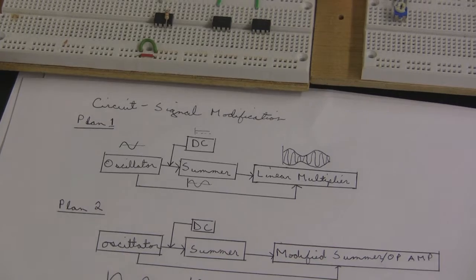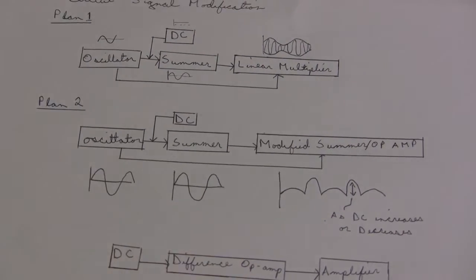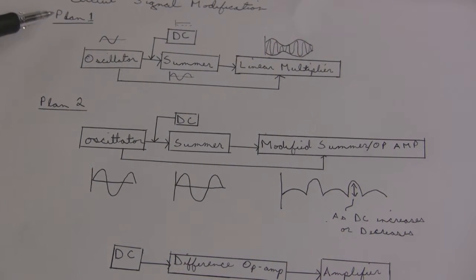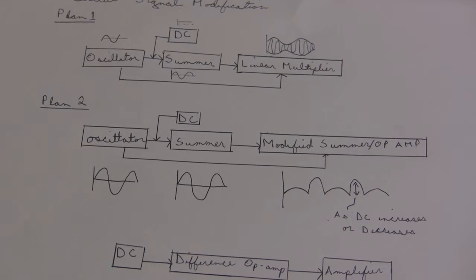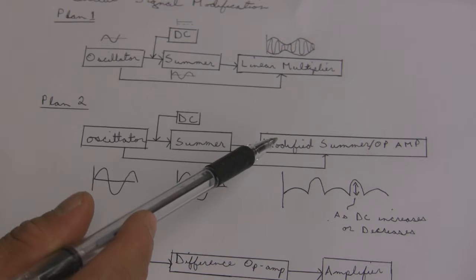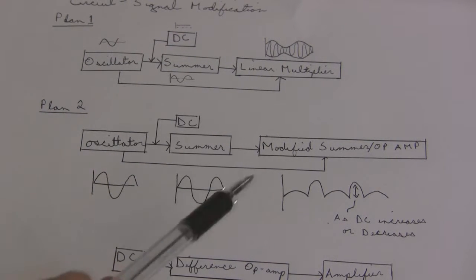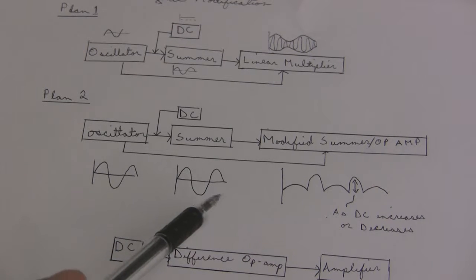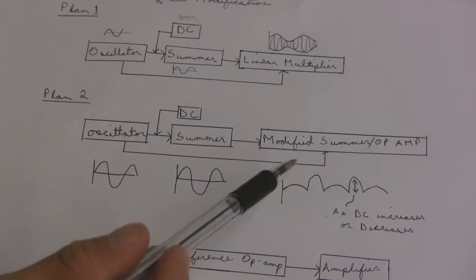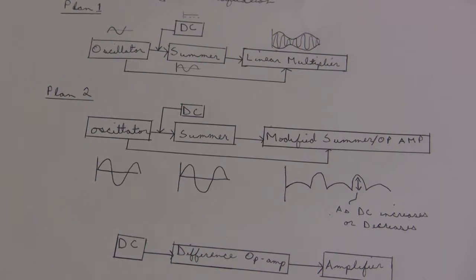So by circumstance, I ran across a modified summer slash op amp. What we did was the same thing from plan one we did with plan two. The only thing that differed, I put an additional op amp summer and grounded it the wrong way. By chance, it happened to give me a wave that looked like this. Basically, these two remain the same, while the middle can move up and down depending on whether or not you increase or decrease the DC voltage.